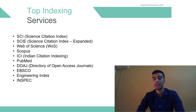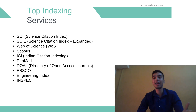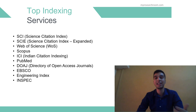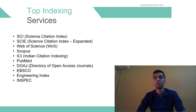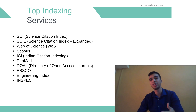The next is the ICI. ICI is a new web platform for measuring performance of Indian research periodicals. This online bibliographic database was launched in 2009. The ICI covers 800-plus journals published from India on science, technical, medicine and social science subjects. Some of the other indexing services are PubMed, the DOAJ or the Directory of Open Access Journals, EBSCO, Engineering Index, and InSpec.